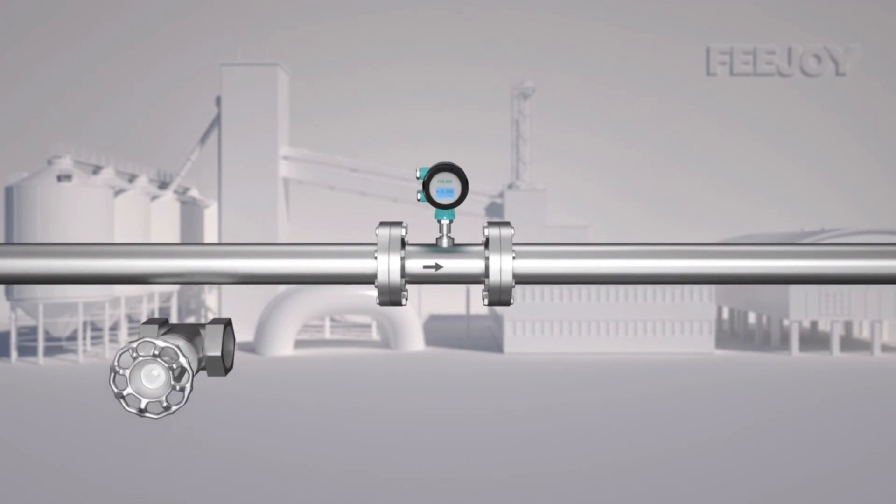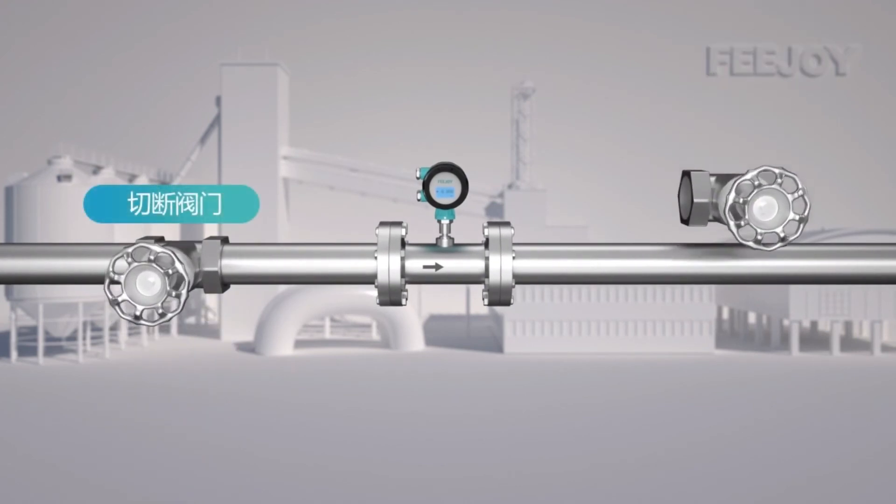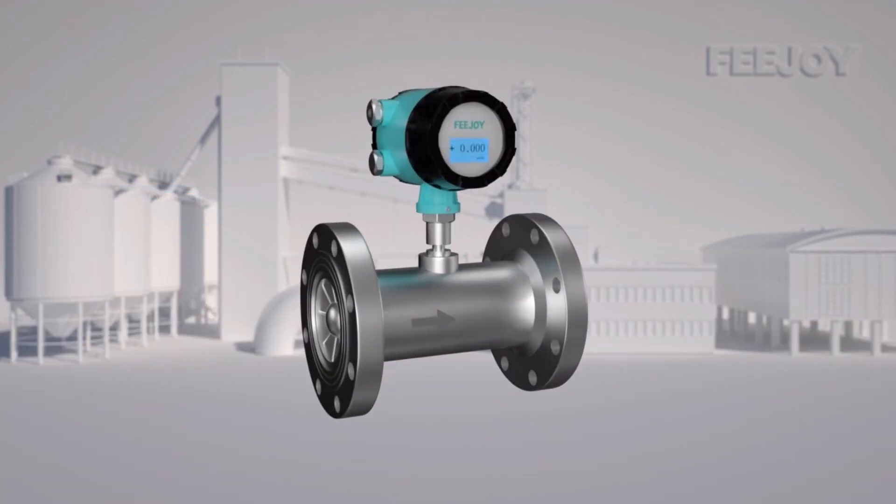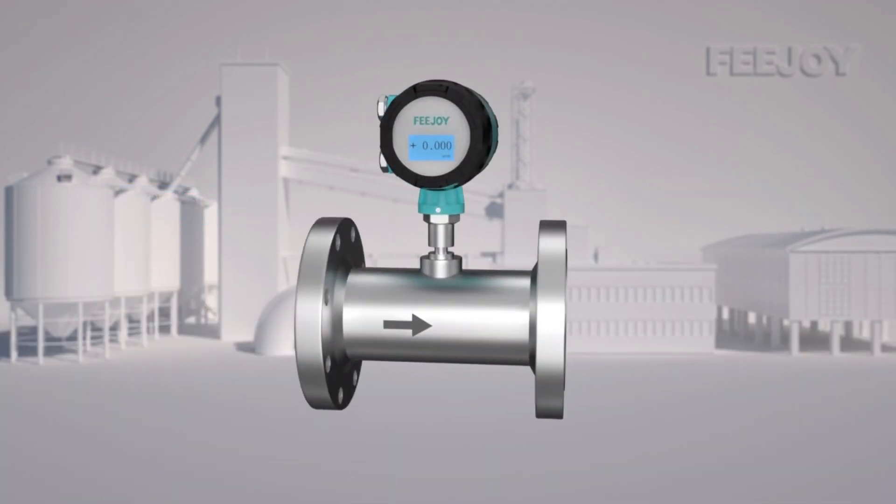A cut-off valve shall be installed on the front and rear pipes of the flow meter, and a bypass pipe shall be provided. Pay attention to FASO, to provide you with the most suitable solution.